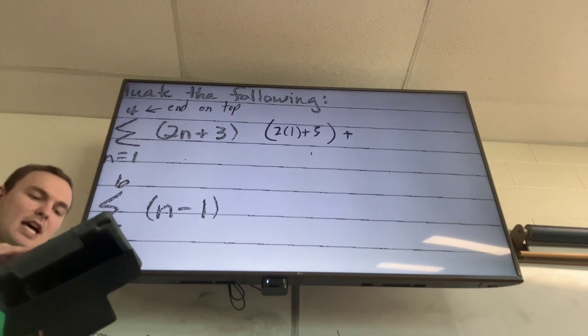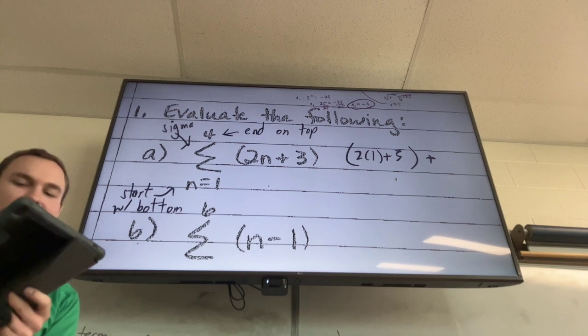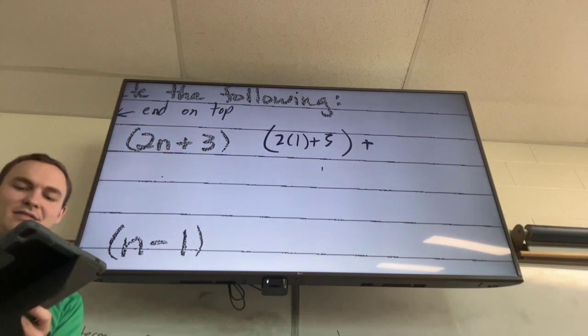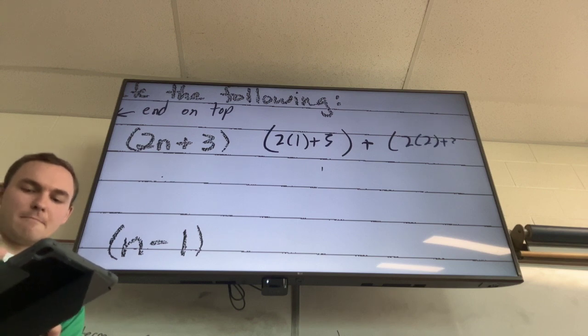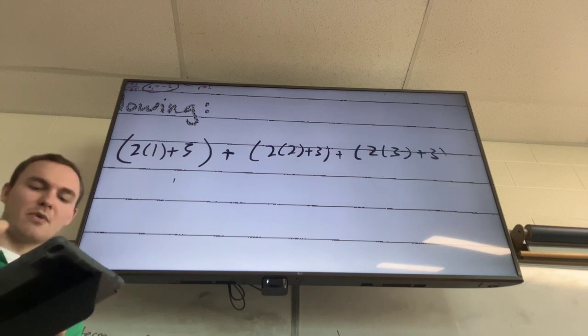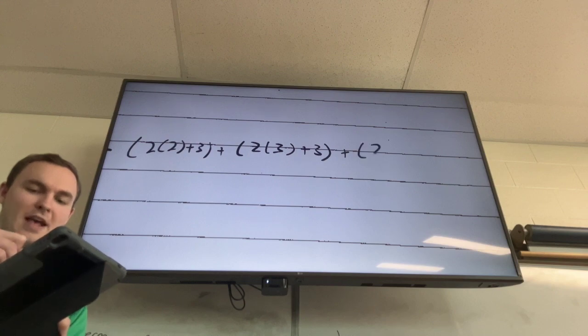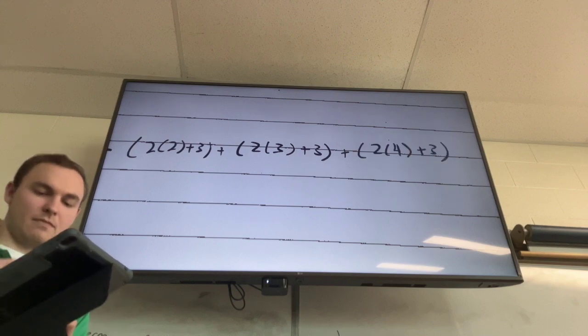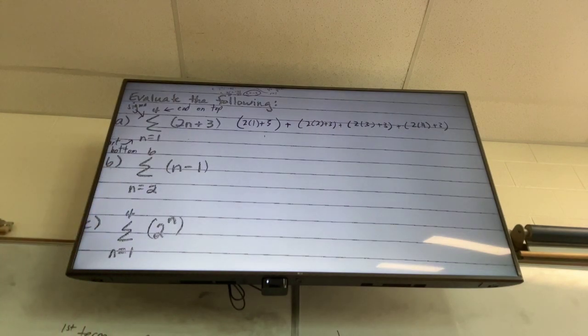And then I do plus, I plug in what's 1 more than 1. What's the next number after 1? 2. So then I do 2 times 2 plus 3. Then I do 2 times 3 plus 3. How do I know where to stop? At 4. So this gives me 5 plus 7 plus 9 plus 11.